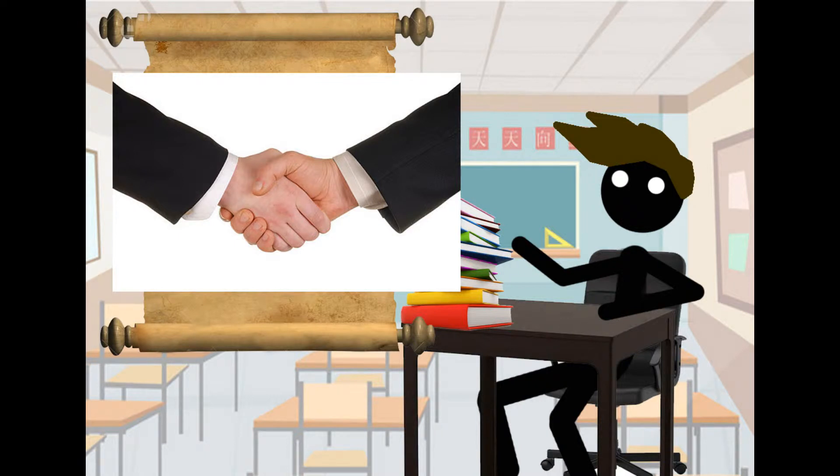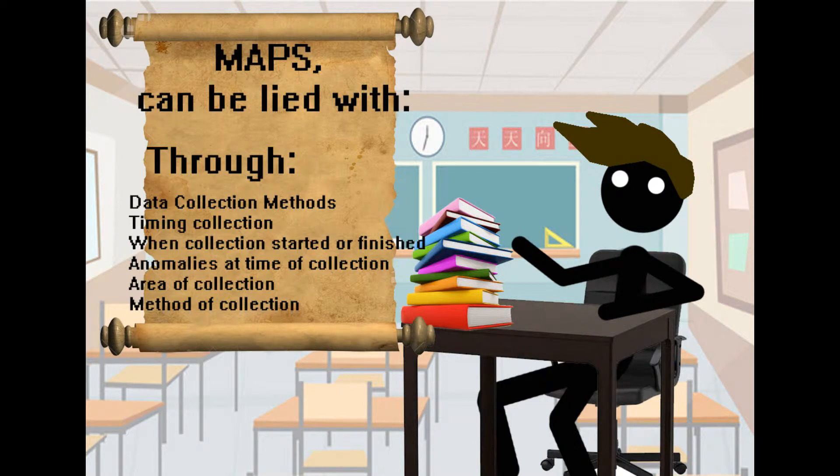The easier the information is to collect and distribute, the easier everything will be. And it's important to recognize that maps can be lied with. The types of lying that you can see include data collection methods, timing of collection, when collection started or finished. For example, did we do it too late because there may be an anomaly, which is the next point. There may be an anomaly, for example, we may be in a drought. If you do a study at the beginning or end of the drought, that will change statistics than if the drought never occurred.